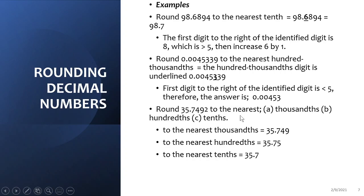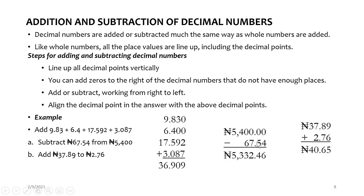Let's round 35.7492 to the nearest thousandths, hundredths, and tenths. To the nearest thousandths: thousandths is 9, the digit after 9 is 2 — not up to five, so we leave the 9. Answer: 35.749. To the nearest hundredths: hundredths is 4, the digit after 4 is 9 — add one to 4 making it 5. Answer: 35.75. To the nearest tenths: tenths is 7, the digit after 7 is 4 — not up to five, so it stays. Answer: 35.7.